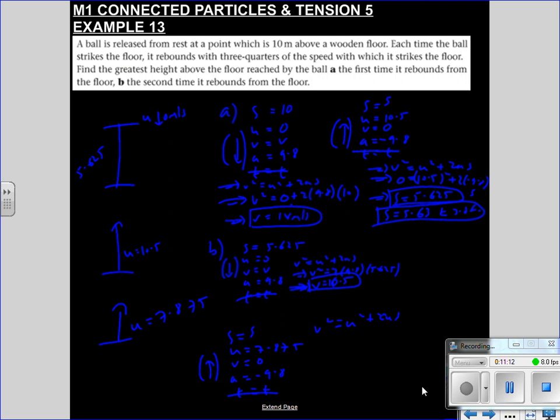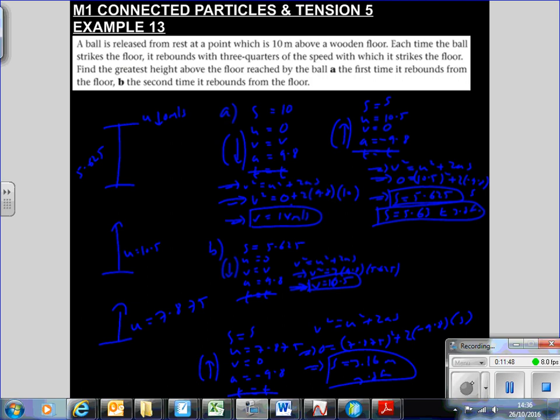V squared is U squared plus 2AS. So hopefully you're kind of skipping me doing all this as you're only watching this if you made a mistake. And we should get 0 then equals 7.875, 0 equals 7.875 squared plus minus 9.8 S. And therefore S will equal 7.875 squared divided by 2 times 9.8, which is 3.16 to 3SF. So hopefully we agree there.